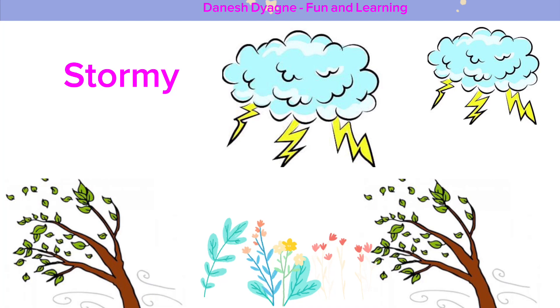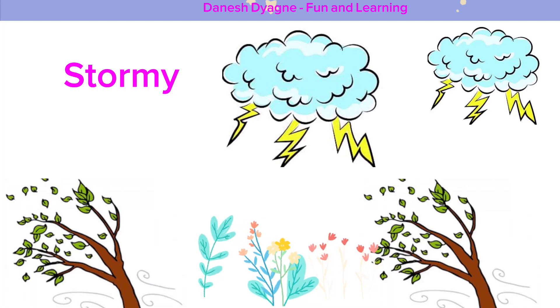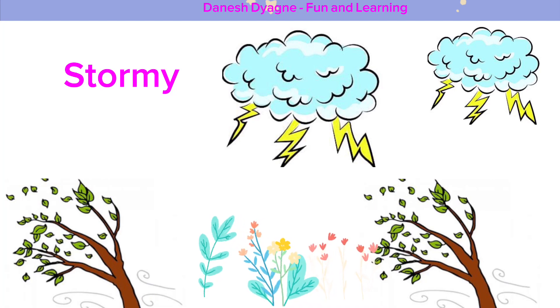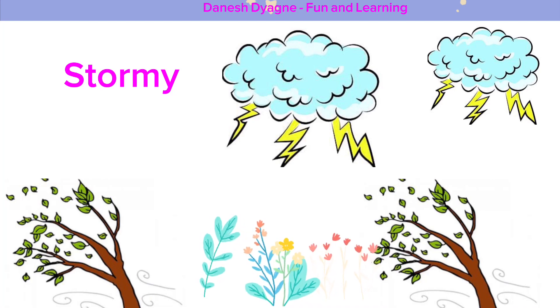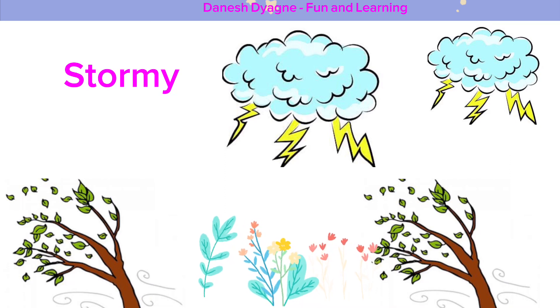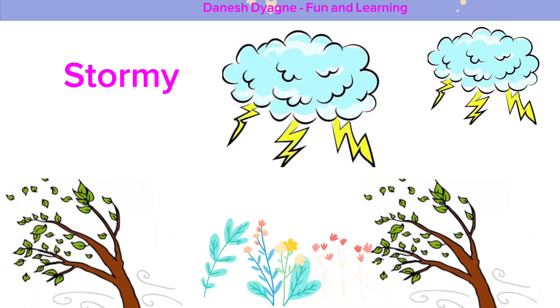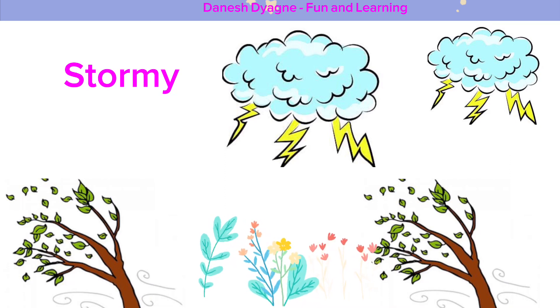Stormy. Stormy is characterized by strong wind. And when you see thunder and lightning coming out of the clouds, we can see it's stormy.